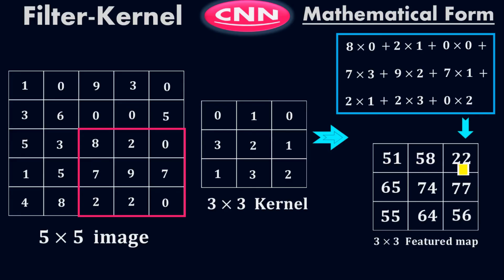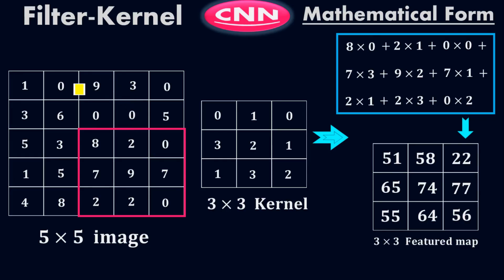The values 51, 58, 22, 65, 74, 77, 55, 64, 56 — these are the new pixels. These are the new image pixels which we have featured out of this image. This process, this transformation, this phenomenon is called feature extraction — to extract the important information and leave the rest. We extract the important information out of the 5×5 image and get this feature map, which is the important information of the image.